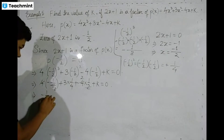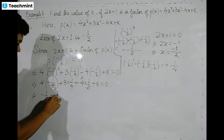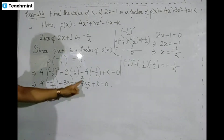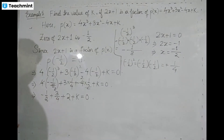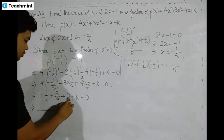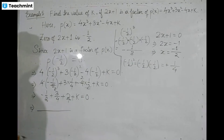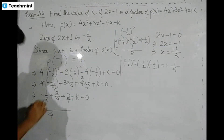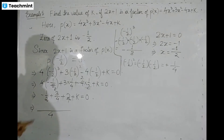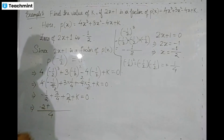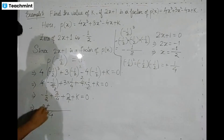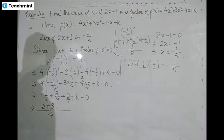Substituting: -1/2 gives -(-1) which is -2, then 4 divided gives 1, then 3 multiplied gives 3, plus 1/4 divided gives 4, then 4 times 2 gives 8. Plus k equals 0.